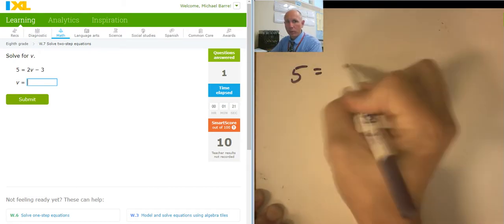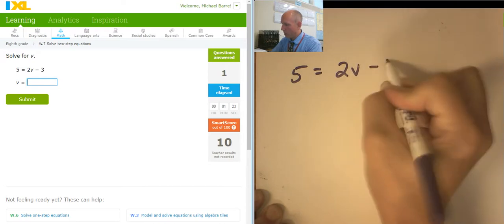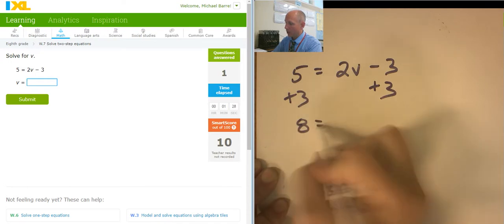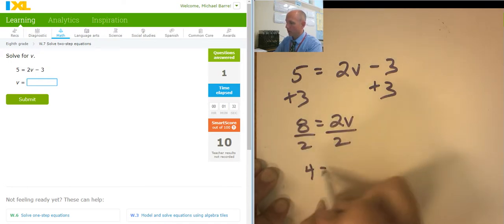5 equals 2v minus 3. I would like to add 3 to both sides. That's going to give me 8 equals 2v. I would like to divide both sides by 2. So v equals 4.